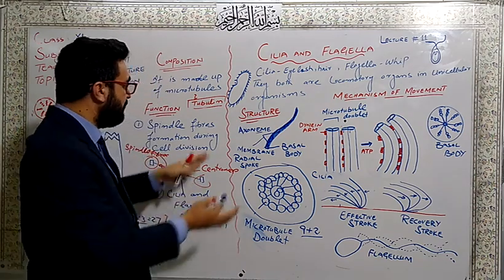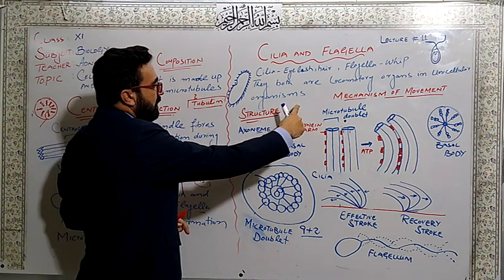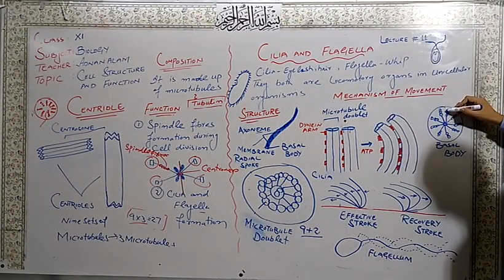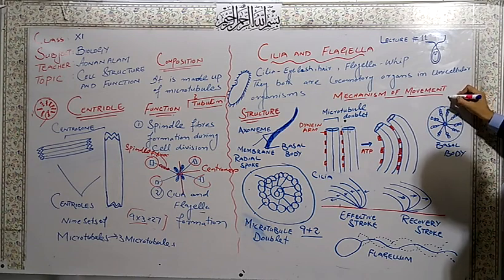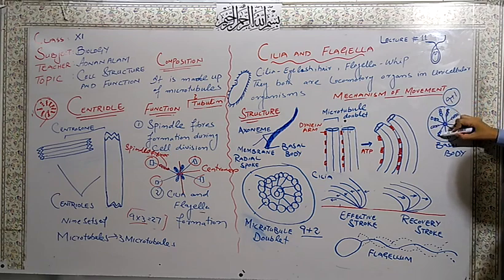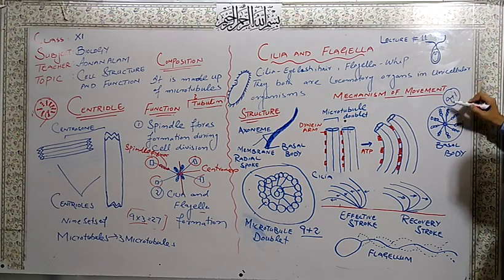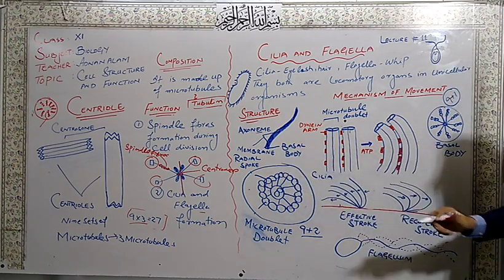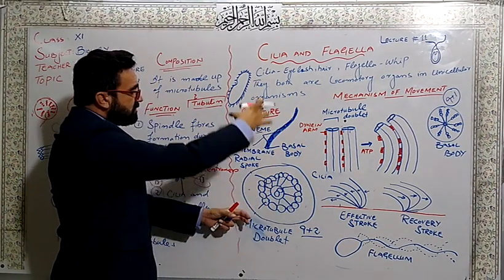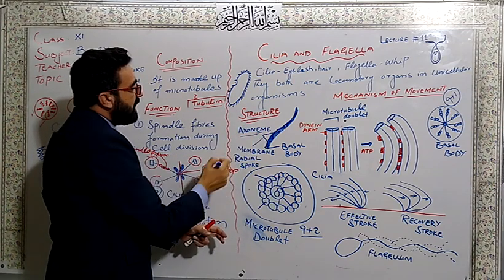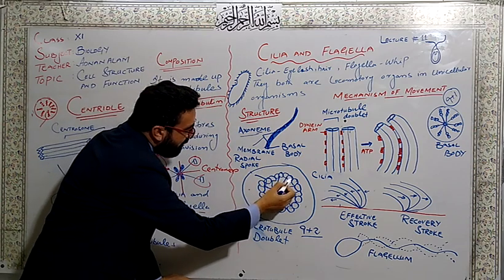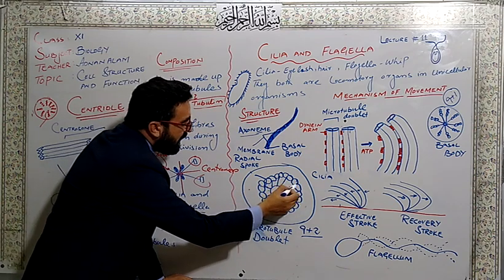If we study the structure of some unicellular organism like paramecium, on the body of paramecium there are many minute structures present called cilia and flagella. The difference is flagella are few in number and they are larger in size, and cilia are minute and abundant in number.